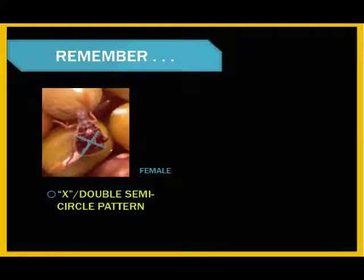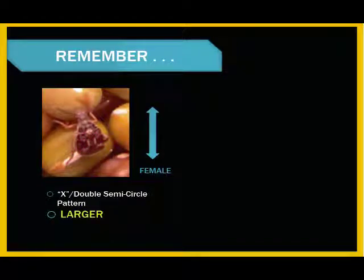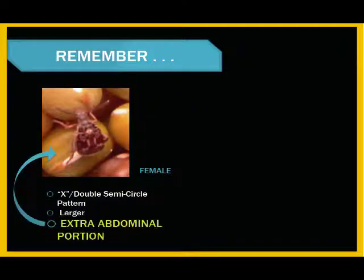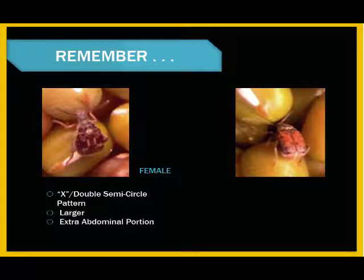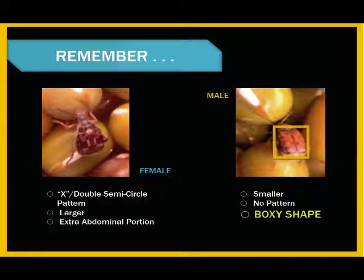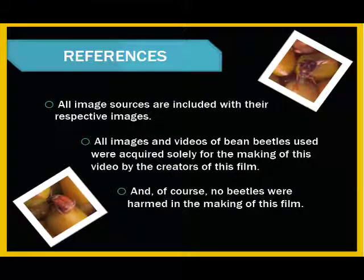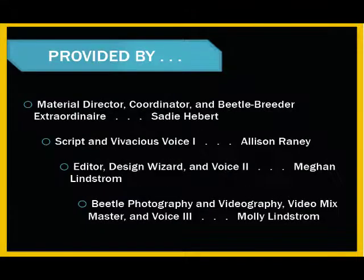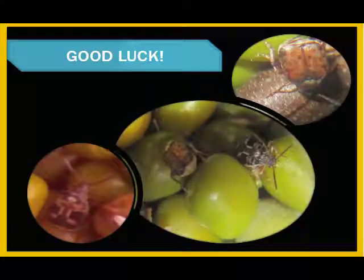Just remember when you're starting your projects that females have an X or double semi-circle shape on their backs, are generally larger than the males, and have an additional partition on the rear of the abdomen, while males are smaller than the females, have no pattern on their backs, and are squarish in shape without an additional component to the abdomen. Hopefully this video has helped you learn more about the diversity of life as well as how to determine the different sexes of bean beetles. Once you begin to recognize the inherent differences between the members of this sexually dimorphic species, determining the sexes of your bean beetles should come easily. Good luck with your sexing!